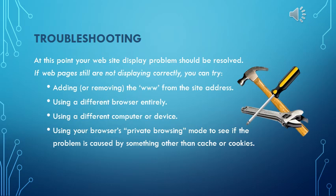You can add or remove the www from the site address. Most sites will work with and without it, and the browser considers it two different sites. You can use a different browser — so if you're in Chrome, try Opera or IE or one of the others. You can go to a different computer, which also starts you over. Or you can try using your browser's private browsing mode to see if the problem is actually caused by something other than the cache or the cookies — it may be something else entirely.